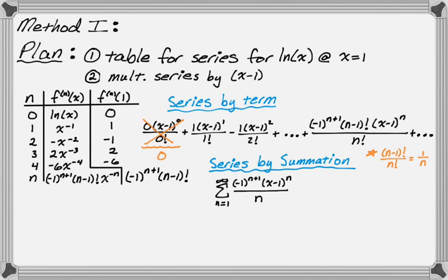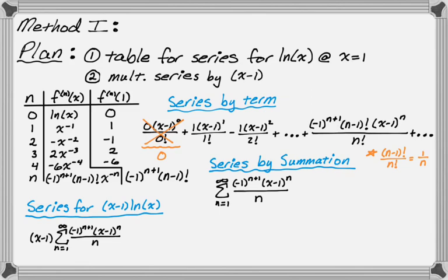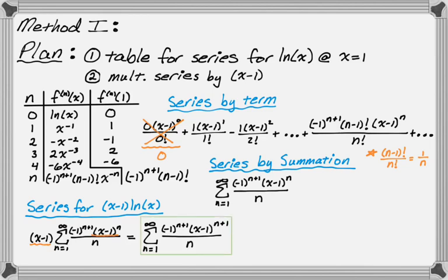But I want (x minus 1) times natural log of x, so I'll take the summation I just wrote and multiply by (x minus 1). Multiplying into the summation, the (x minus 1) on the outside combines with the (x minus 1) to the n inside, giving the sum from 1 to infinity of negative one to the n plus one times (x minus 1) to the n plus one, all over n. This is my first version of the series.